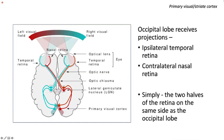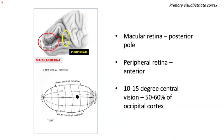One occipital lobe receives projections from the ipsilateral temporal retina and the contralateral nasal retina — essentially the two retinal halves on the same side as the occipital lobe, subserving the contralateral visual field. The macular retina is represented at the posterior pole, while the peripheral retina is situated more anteriorly towards the deeper part of the calcarine sulcus. Fifty to sixty percent of the occipital cortex subserves the macular retina, responsible for 10 to 15 degrees of central vision.